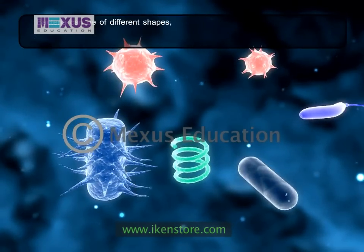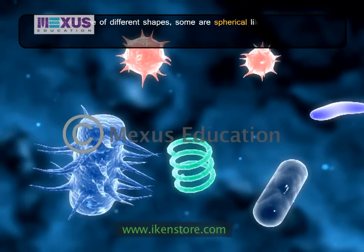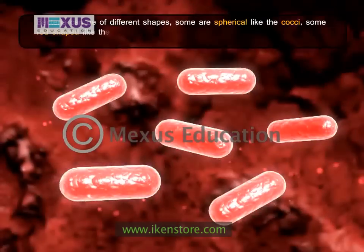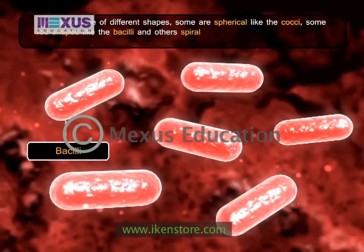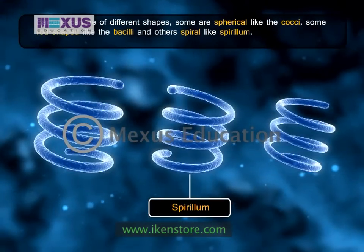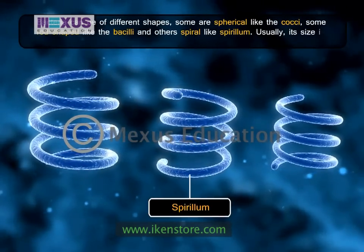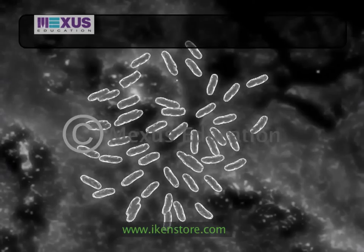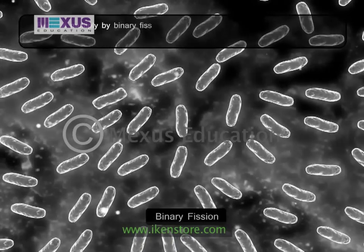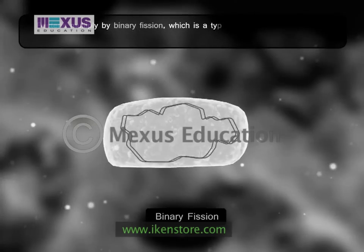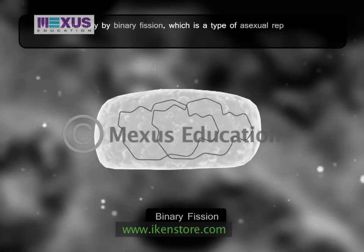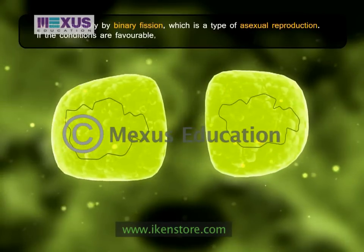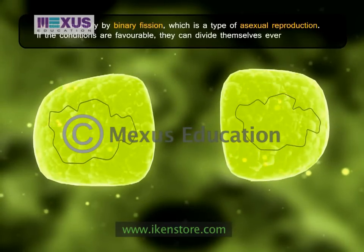Bacteria can be of different shapes: some are spherical like the cocci, some are rod-shaped like the bacilli, and others are spiral like the spirilla. Usually their size is at most 2 micrometers. Bacteria multiply by binary fission, which is a type of asexual reproduction; if conditions are favorable, they can divide every 40 minutes.